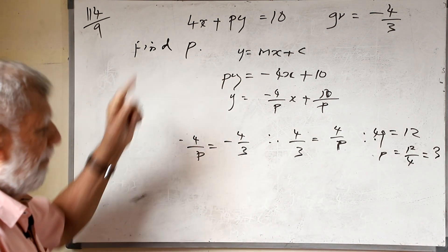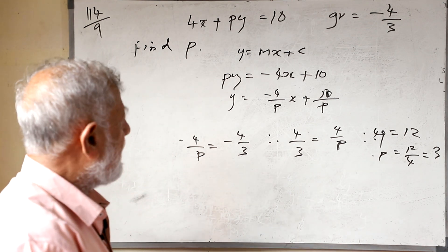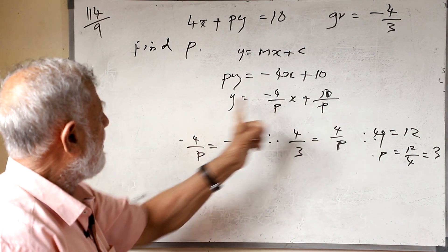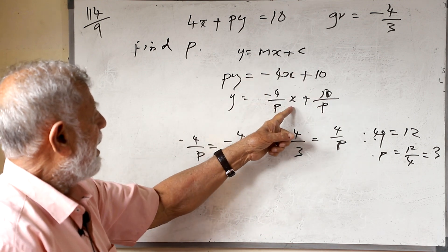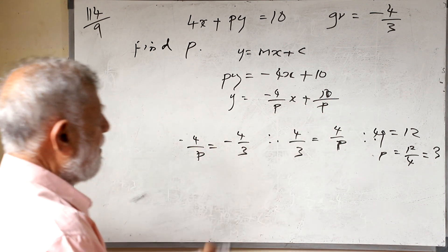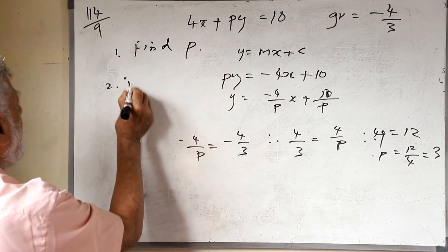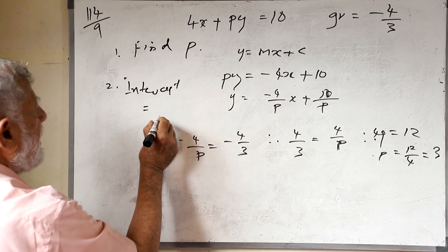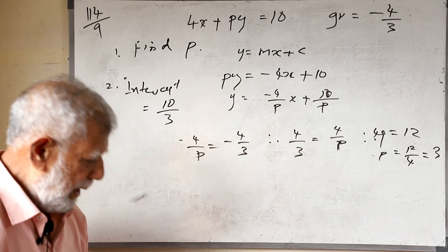We have found the value of p. The second question is to write the intercept. The intercept here is 10/p. Since p = 3, the intercept equals 10/3. Just substitute p into the formula.